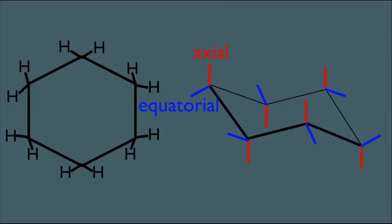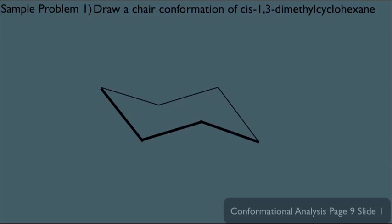Let me show you how to use this to answer one type of problem you might encounter on an orgo test. This one says: draw a chair conformation of cis-1,3-dimethylcyclohexane. First, draw your general template of a chair cyclohexane molecule. Then place the substituents — we have a methyl on carbon-1 and carbon-3. Start with the left carbon and put a methyl on it. In this case, I'm placing it on the axial bond, and I'm going to call this carbon-1. I didn't have to make it axial — I could have made it equatorial, and you'll see in a few minutes that it doesn't matter.